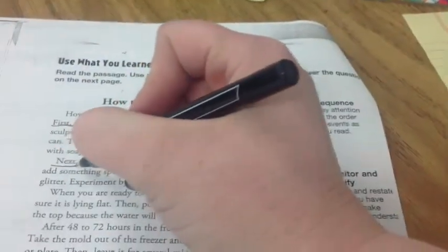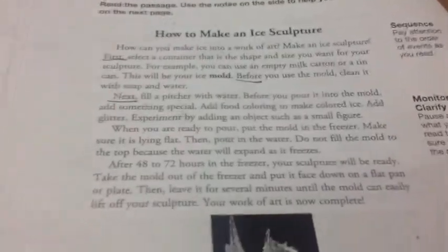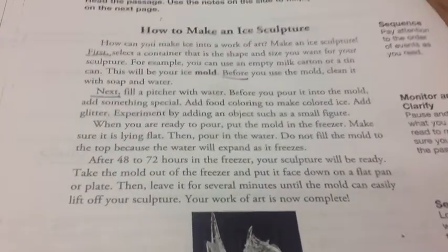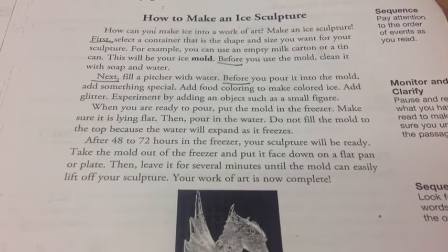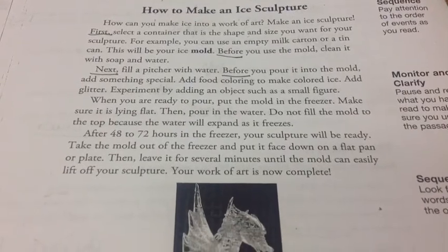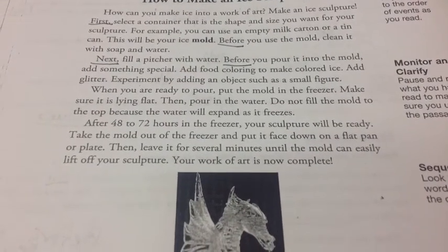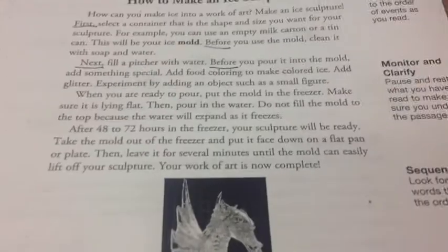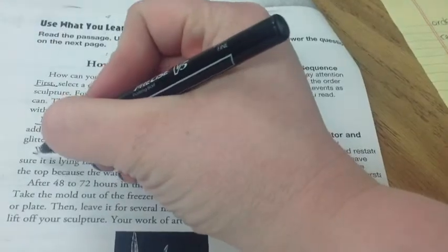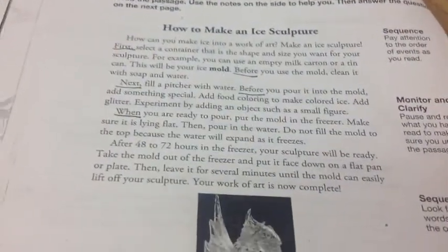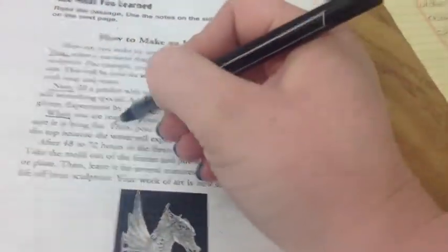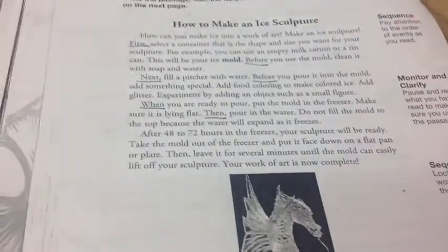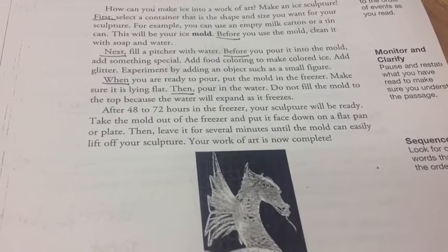Next — there's an order word, a sequence word — let's underline that. Next, fill a pitcher with water. Before you pour it into the mold, add something special — add food coloring to make colored ice, add glitter, or experiment by adding an object such as a small figure. When you are ready to pour, put the mold in the freezer. That word 'when' is also a time word, so we're going to underline that. Make sure it is lying flat. Then pour in the water — 'then' is a time word, I'm going to underline that word.